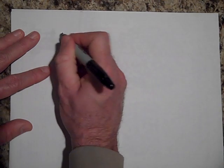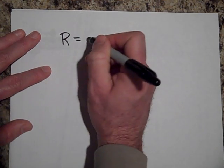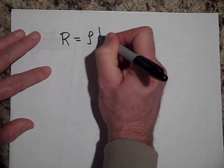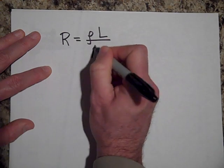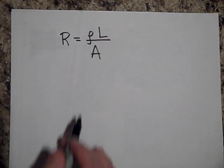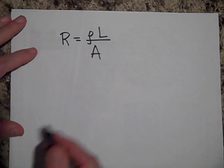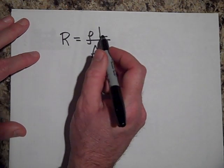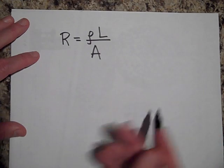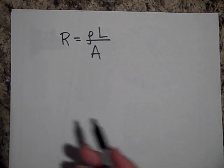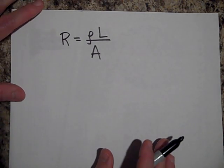So the resistance of a metal depends on the following things. The resistance of a metal depends on what it's made out of, definitely. And it also depends on how long the wire is. The longer the wire is, the more resistance it's going to give to the flow of current.